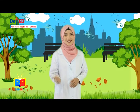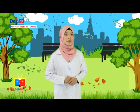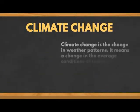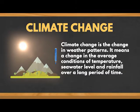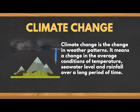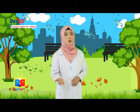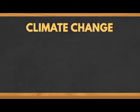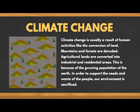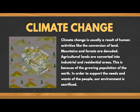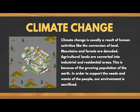Do you know what climate change is and how it affects our Mother Earth? Climate change is the change in weather patterns — it means a change in the average conditions of temperature, seawater level, and rainfall over a long period of time. Climate change is usually a result of human activities like the conversion of land. Mountains and forests are denuded, and agricultural lands are converted into industrial and residential areas because of the growing population.